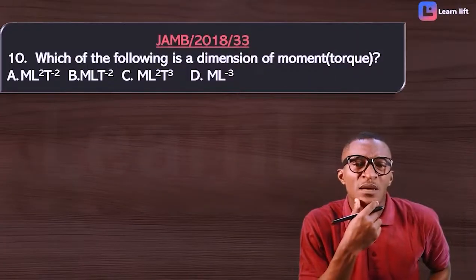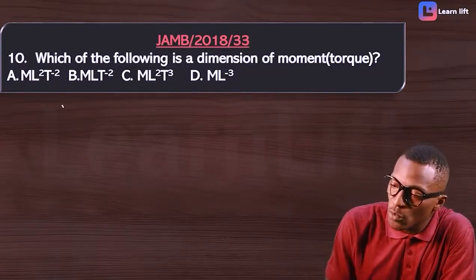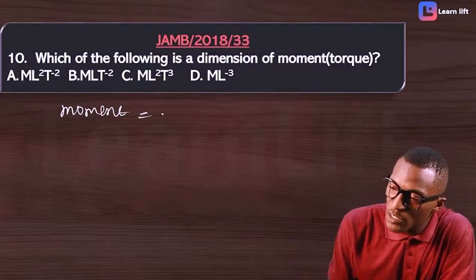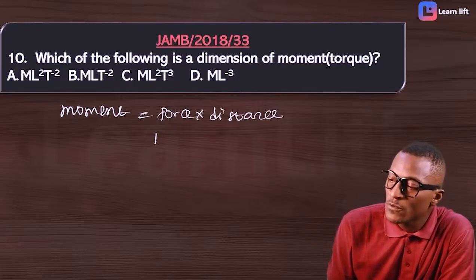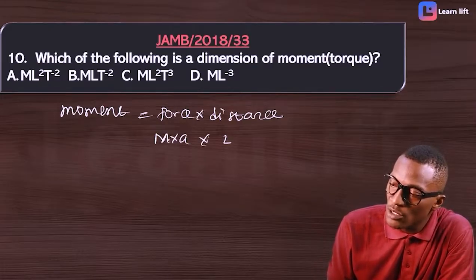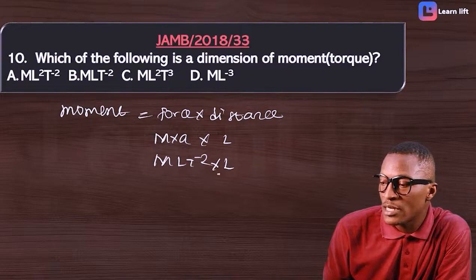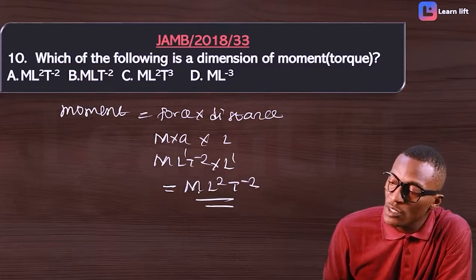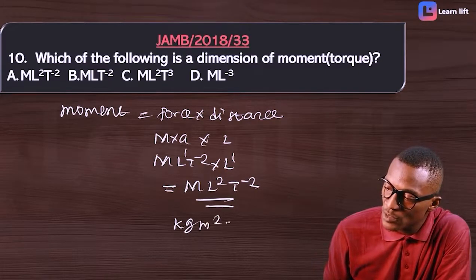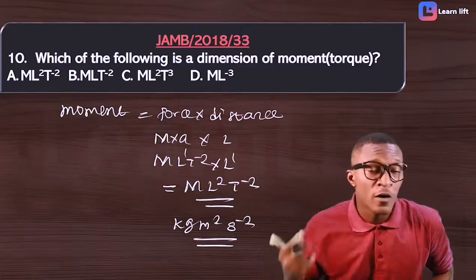What is the dimension for moment (also called torque)? Moment equals force times distance. Force is mass times acceleration; distance is L. In dimension: M × LT⁻² × L = ML²T⁻². In units: kilogram × meter² × second⁻². So moment and work have the same dimension ML²T⁻².